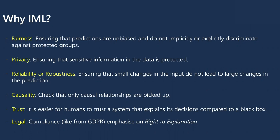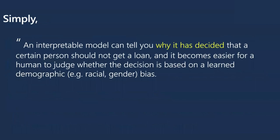Legality is one thing many companies care about more than any other reason. Simply put, an interpretable machine learning model can explain why a particular decision has been made — whether a loan, visa, or job offer was rejected — so that a human being can intervene and judge whether the model is actually learning correctly or has some inherent bias.